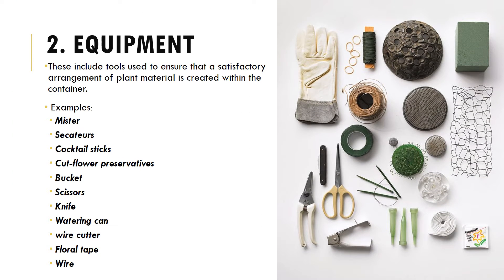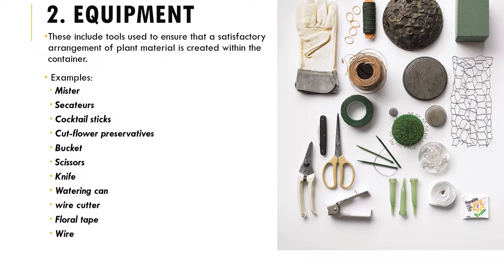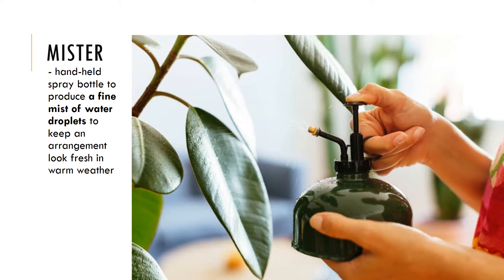The second thing needed for flower arrangement is the equipment — tools used to ensure a satisfactory arrangement of plant material within the container. Examples include the mister, secateurs, cocktail sticks, cut flower preservatives, buckets, scissors, knife, watering can, wire cutter, floral tape, and wire. The mister is the spray bottle you see being held by plantitos or plantitas. It's called mister because once you push the spray button a fine mist of water droplets is emitted to keep an arrangement looking fresh, especially in warm weather.